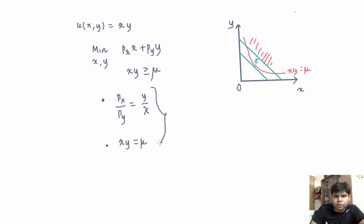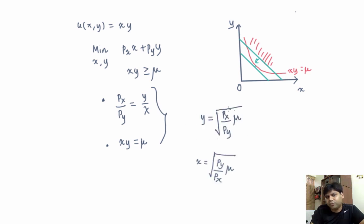Now we have two equations, two unknowns, and we can solve for x and y. So this is the Hicksian demand function for y, and this is the Hicksian demand function for x.